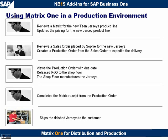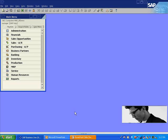In this demonstration, we will review using Matrix One in a production environment. Our production manager is going to review the matrix for the teen jerseys product line, which is a new product line. He'll notice that the pricing for the new jerseys is incorrect and will change that price, exploding the change down to the child items for the teen jersey. He's also going to review a sales order placed by Sophie for the new jerseys and create a production order from that sales order to expedite delivery to Earthshaker. Once the production order is created, he will review it with its due date and release it to the shop floor. The shop floor will manufacture the jersey, and the matrix will be used to receive the quantity actually completed, after which the finished goods can be shipped to the customer.